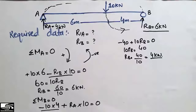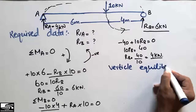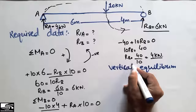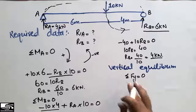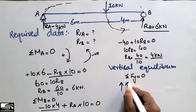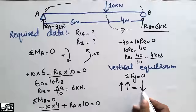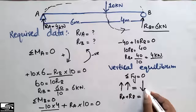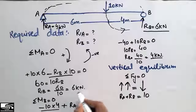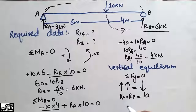Now to verify the equilibrium using vertical equilibrium: the summation of all vertical forces must equal zero, meaning the sum of upward forces equals the sum of downward forces. The two upward forces are RA and RB, and they must equal the downward force of 10 kN. So RA plus RB equals 10 kN. Substituting: RA is 4 kN and RB is 6 kN, which gives 4 plus 6 equals 10.